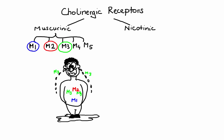Muscarinic receptors are members of the G protein-coupled receptors. M1 and M3 are coupled to G protein of type Gq. Stimulation of Gq leads to an increase in intracellular levels of calcium, which can trigger processes such as contraction, secretion, and neurotransmission. On the other hand, M2 receptors are coupled to G protein of type Gi. Stimulation of Gi can lead to opening of potassium channels, which in turn causes hyperpolarization and reduction of heart rate.